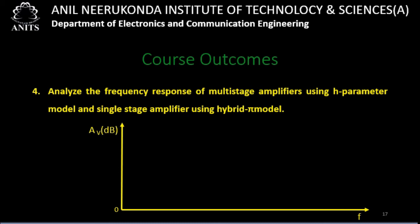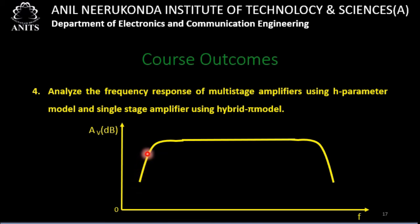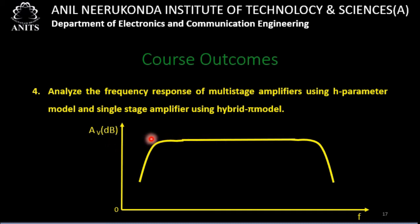In practice, the frequency response characteristics look like this: with increasing frequency, the gain increases, then remains constant, and then decreases again. The gain increases slowly up to a certain frequency, remains constant over a range, and then decreases. But ideally, an amplifier should provide constant gain throughout the entire frequency range, which is why we are interested in finding the frequency response characteristics.